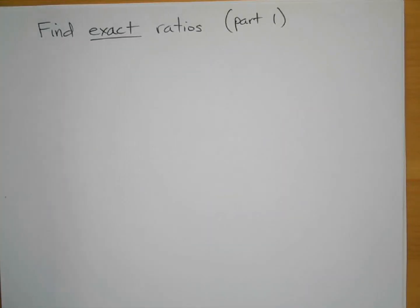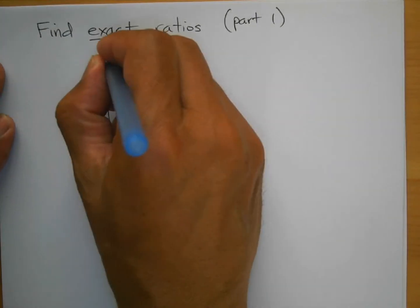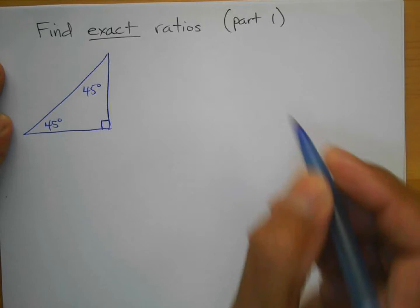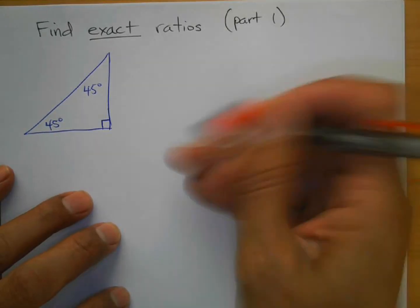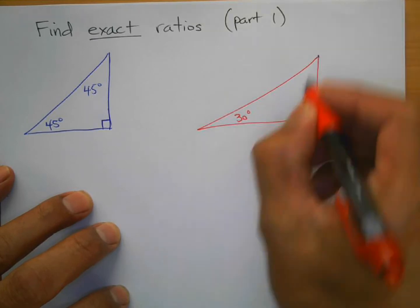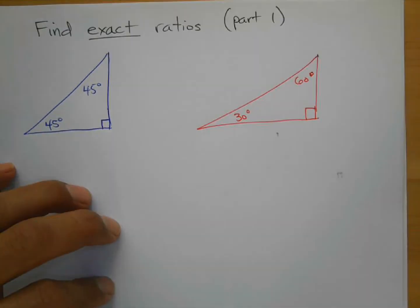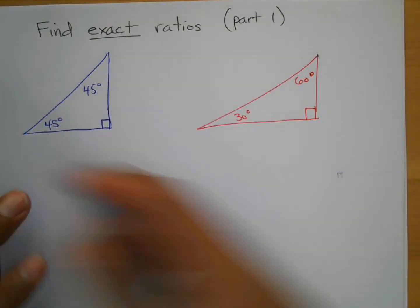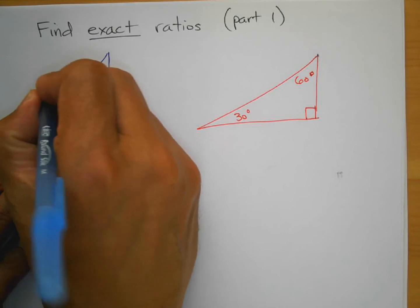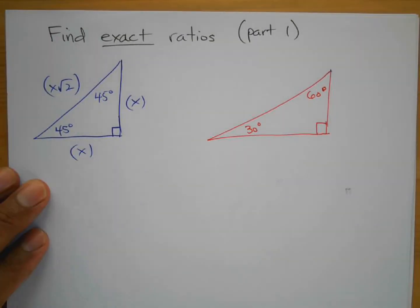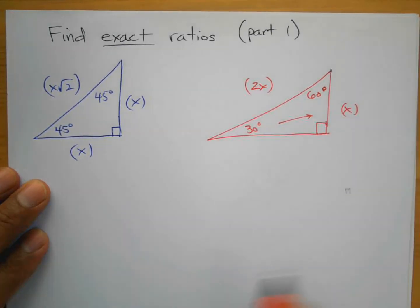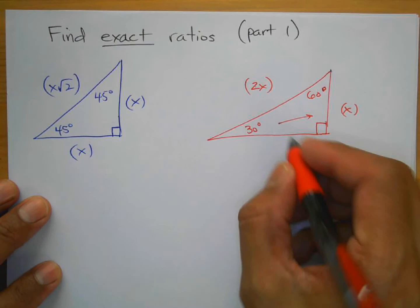Let's start by reviewing the 30-60-90 and the 45-45-90 triangles. For the 45-45-90, the sides are x, x, and x√2. For the 30-60-90, the hypotenuse is 2x, the side across from 30° is x, and the remaining side is x√3.